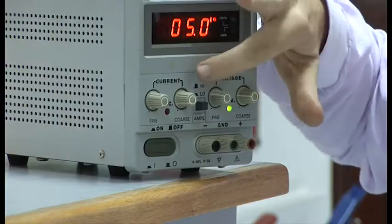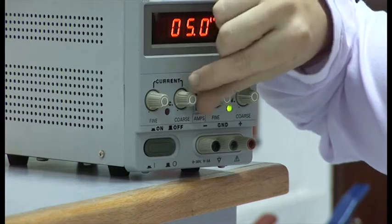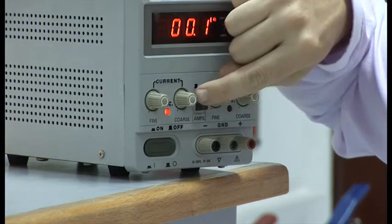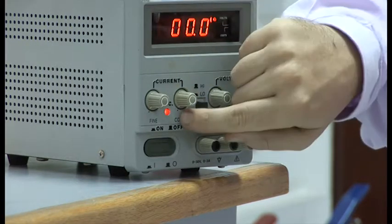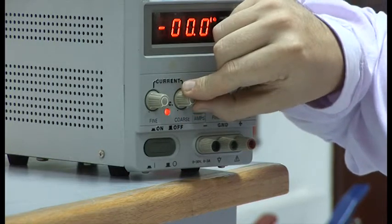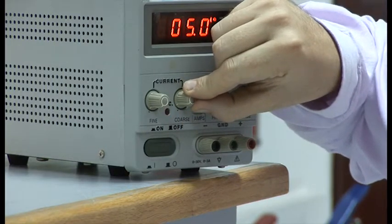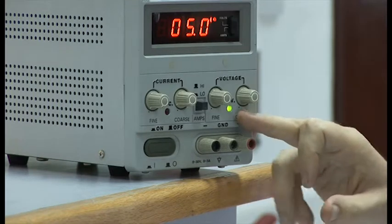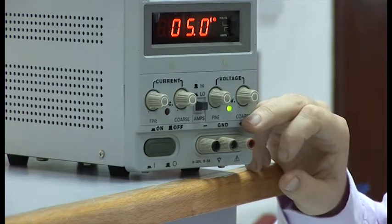There are one or two critical things with the power supply that you will need to set. On the current course knob, we need to make sure that our course knob is above the little black dot. When it is, you should have a green light on the right hand side of the power supply.